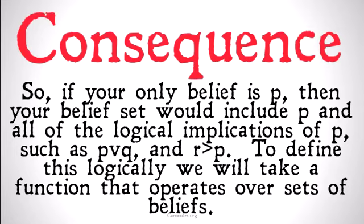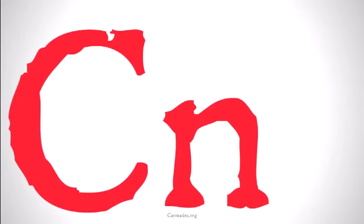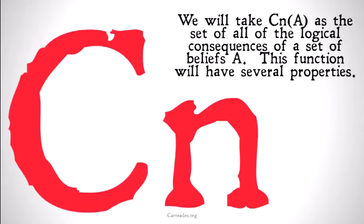To define this logically, we will take a function that operates over sets of beliefs. It's going to be Cn, or the consequence function. We'll take Cn(A) as the set of all of the logical consequences of the set of beliefs A. Note that this will include all of the things that already are in A, and it's going to have a few other properties as well.